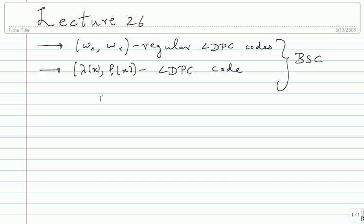What are the various things we saw? We saw construction — the socket construction is one thing I talked about, but there are so many other things when you want to actually construct an LDPC matrix. Hopefully people doing their project in that area will work on that.